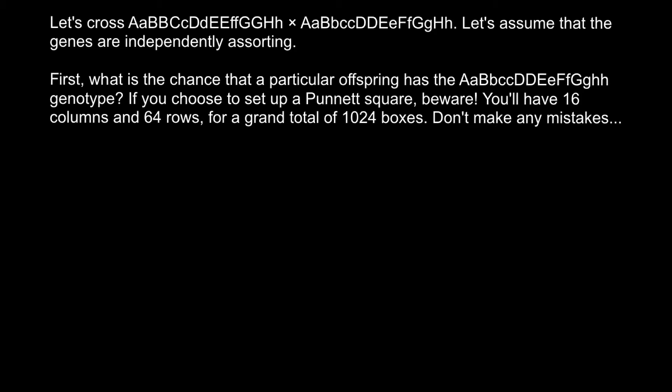If you choose to set up a Punnett square, be aware you'll have 16 columns and 64 rows for a grand total of 1,024 boxes. I encourage you to pause the video, try to solve this problem on your own first, and when you're ready, run the video again and compare your answer with my explanation.